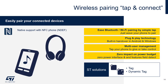An NFC tag in a product can also be used to automate the process of wireless pairing, equally useful for Bluetooth or Wi-Fi. For instance, you could take your smartphone, tap it to a Bluetooth headphone you want to listen to, and automatically be paired.